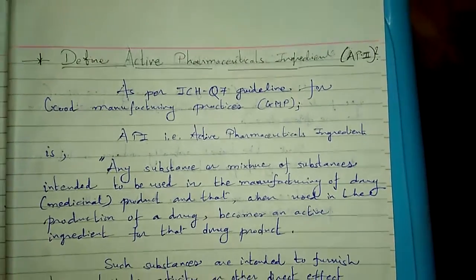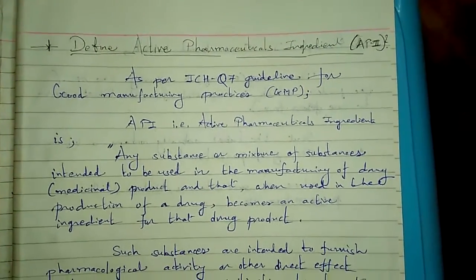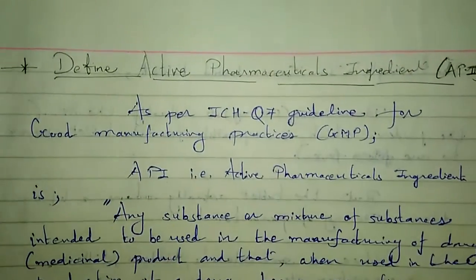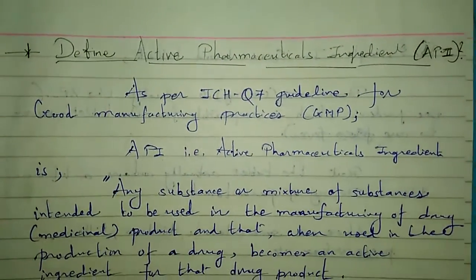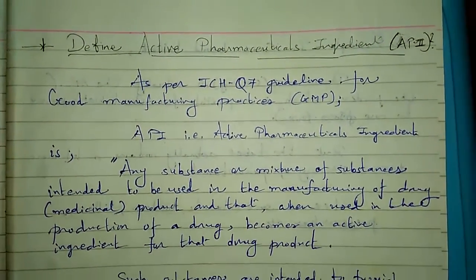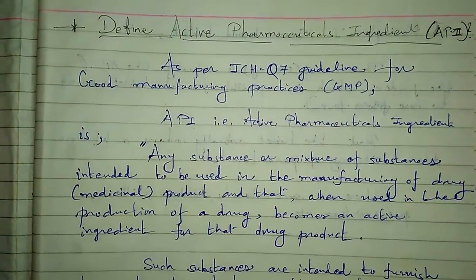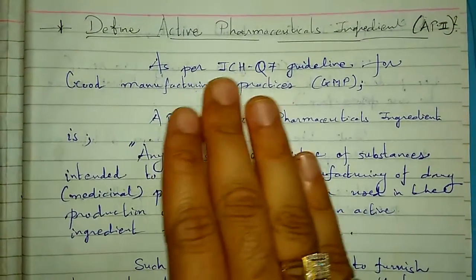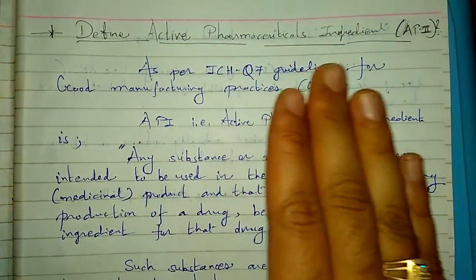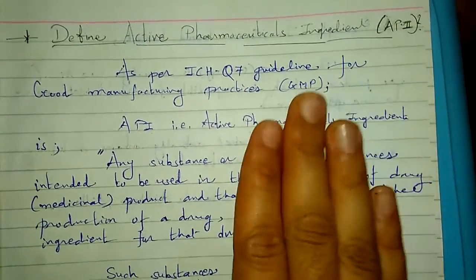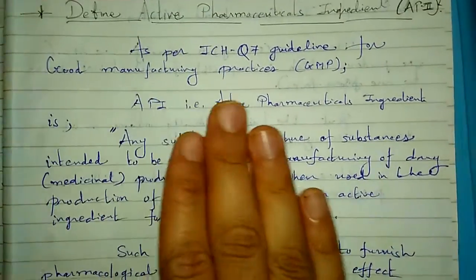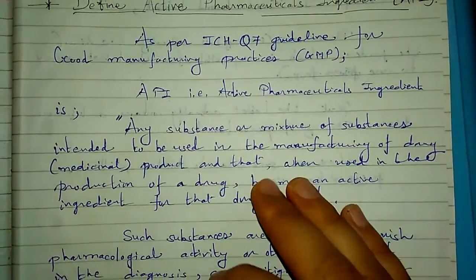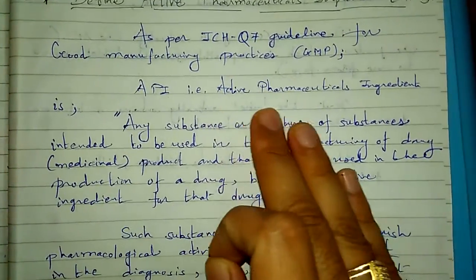Today the topic is the definition of active pharmaceutical ingredients. For pharmaceutical persons, they must know this. As per ICH Q7 guideline for good manufacturing practices, that is GMP, API stands for active pharmaceutical ingredient.